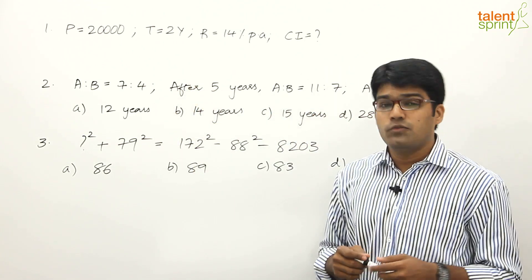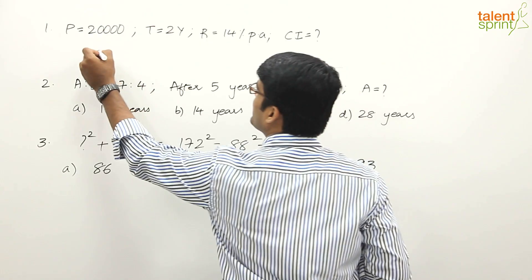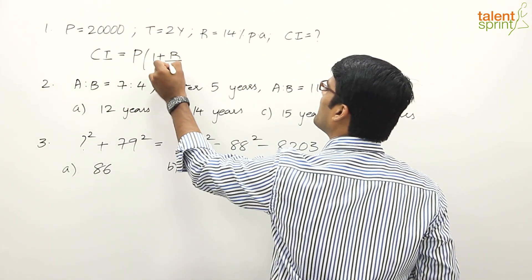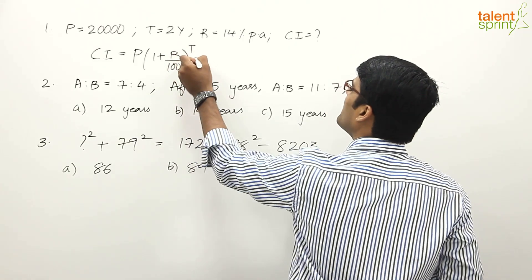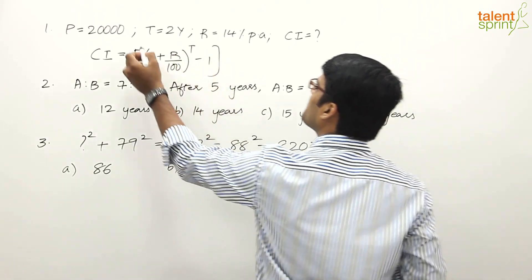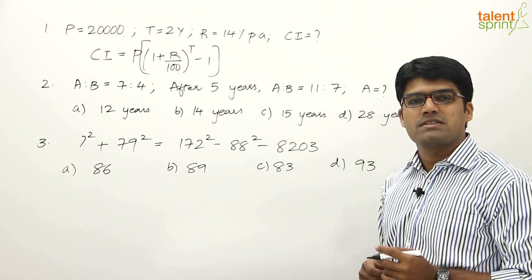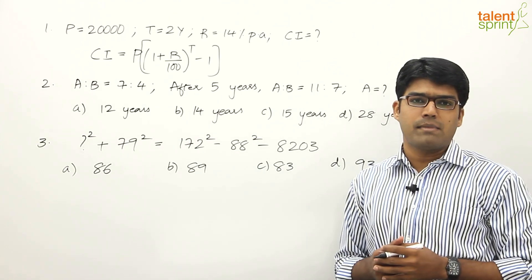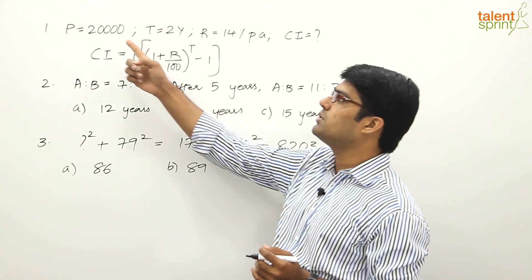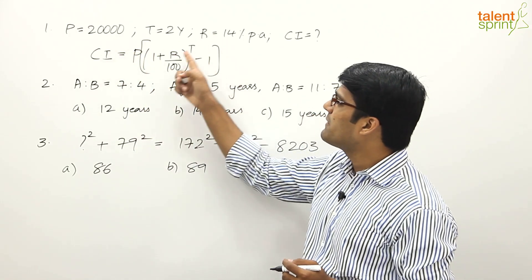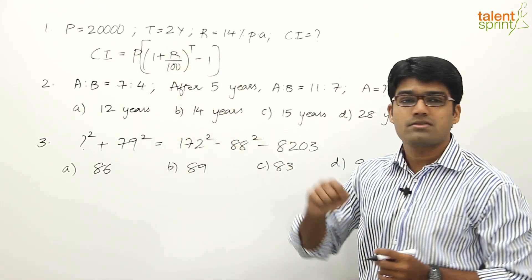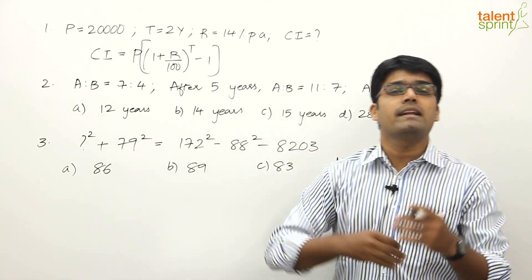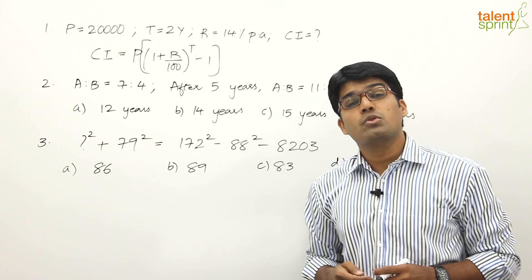Using the compound interest formula: CI = P × (1 + r/100)^t − P, or equivalently CI = P × [(1 + r/100)^t − 1], we substitute the values: P = 20,000, r = 14, t = 2. We simplify and calculate to get the final answer, but this takes at least two minutes.